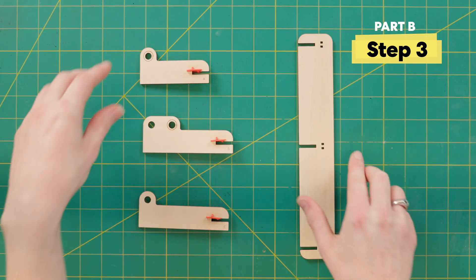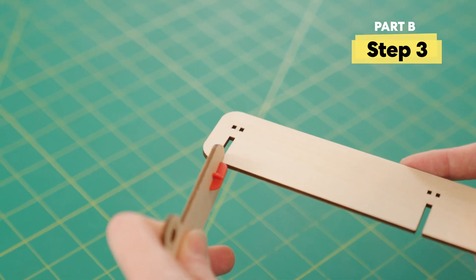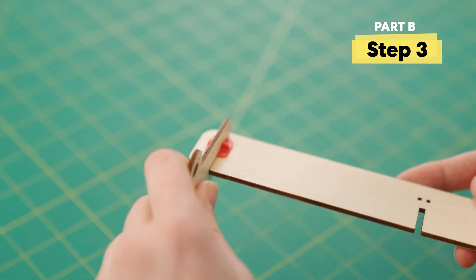Next, grab this long wooden bar. Slide in the wood with the letter A on it at the very end. It might be a tight fit, but make sure you push in all the way.